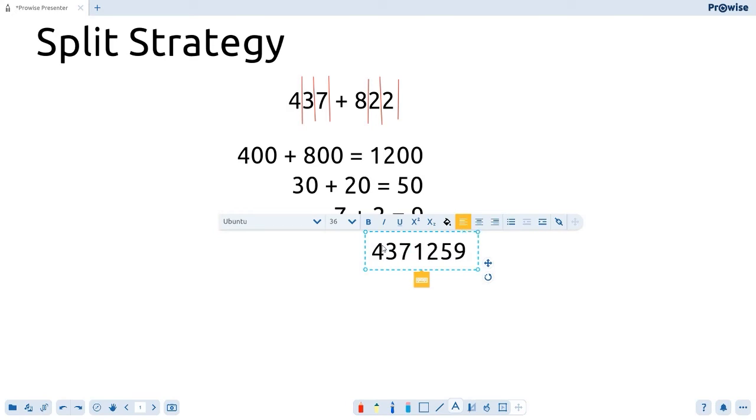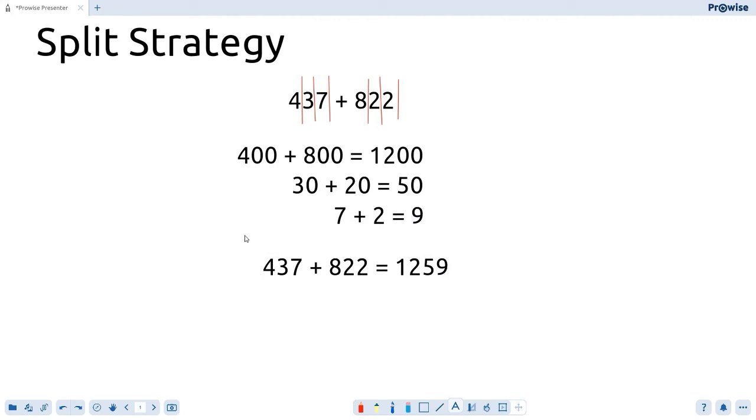To make it a little bit neater, we are just going to write: 437 plus 822 is equal to 1259.